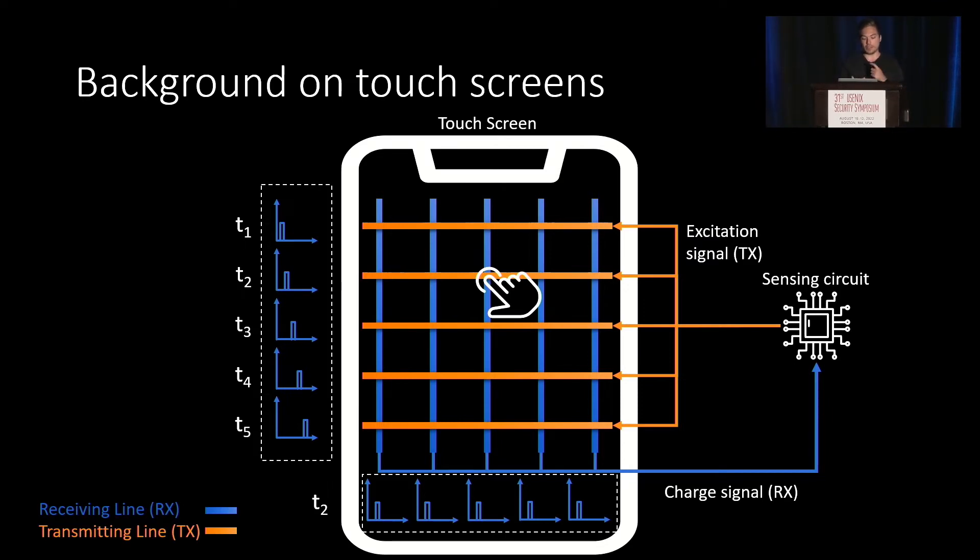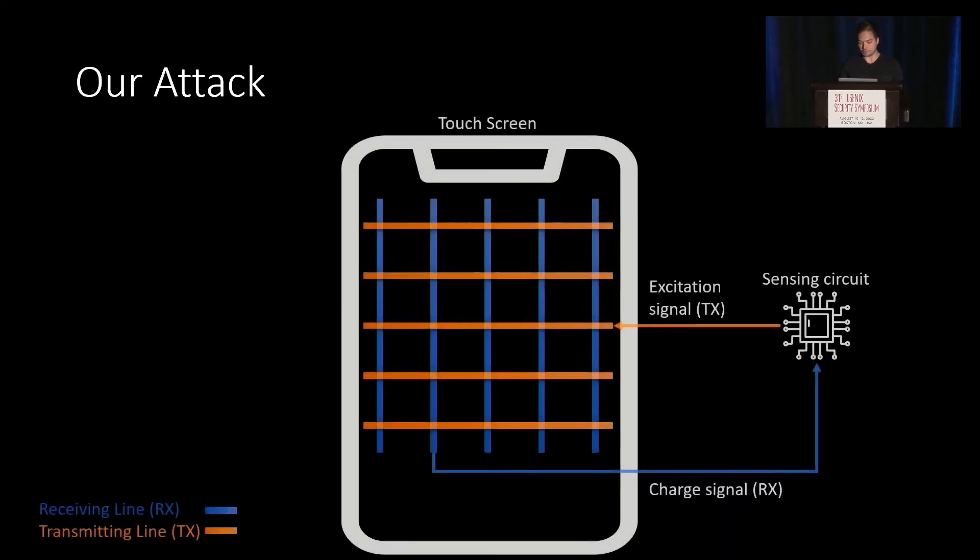The first plate, the receiving line. The second plate, the transmitting line. And the third one, your finger. So it is for sure changing the induced current in the receiving line, which also changed the charge signal. And this is detected as a touchpoint.